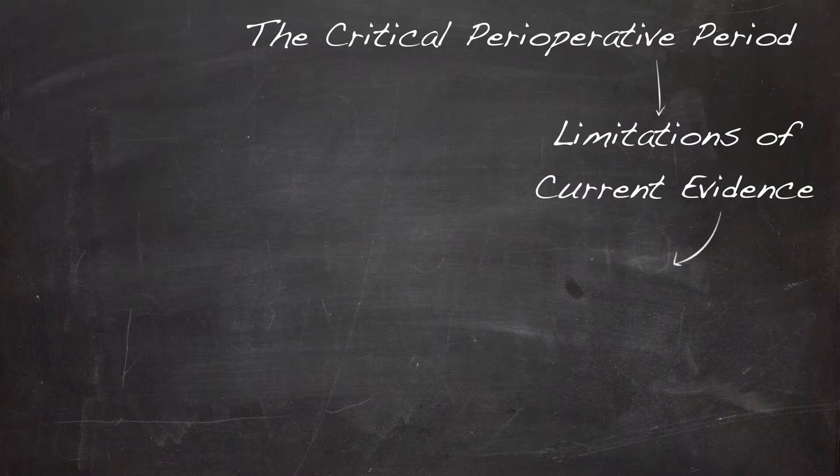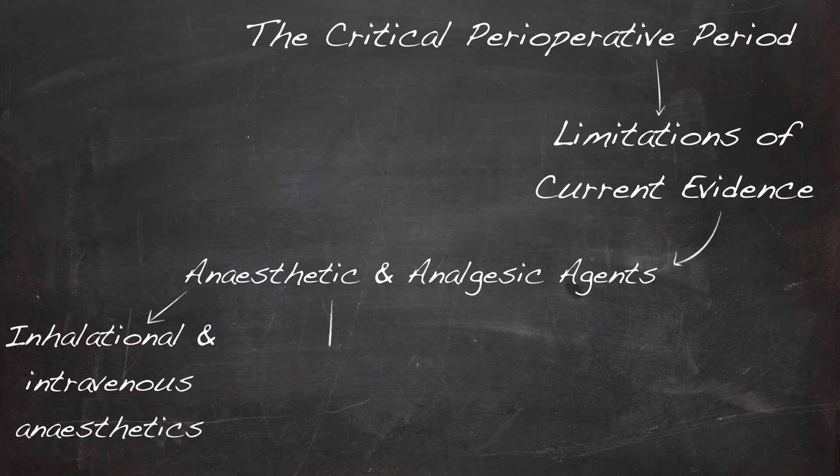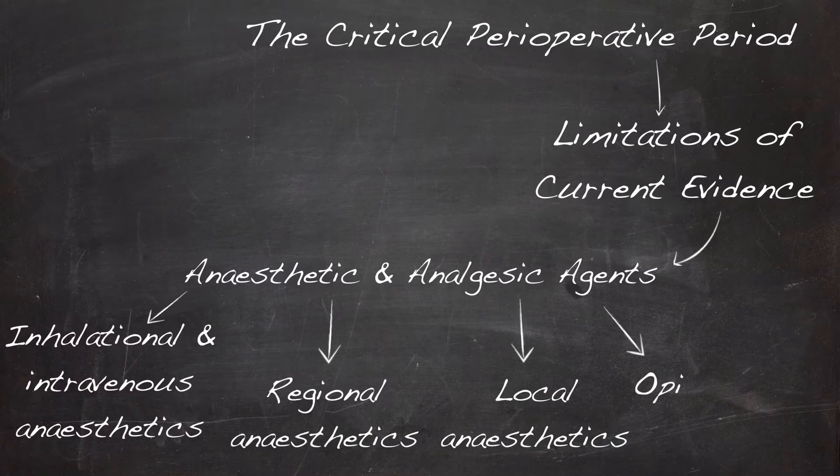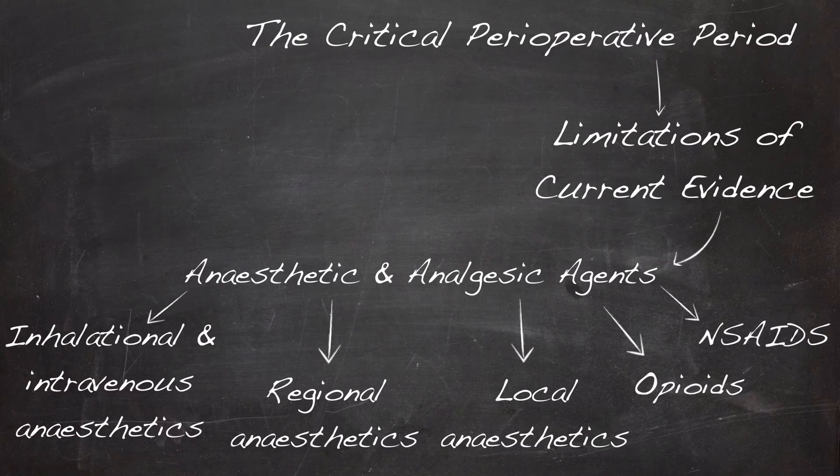Finally, we will move on to a detailed discussion of some perioperative anesthetic and analgesic agents in common use. We will focus on the anesthetic agents, regional anesthesia, local anesthetics, opioids, and non-steroidals, discussing their potential impact on long-term oncological outcomes.